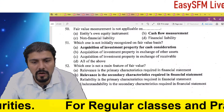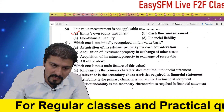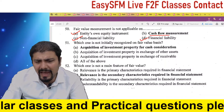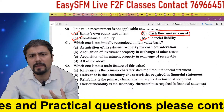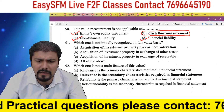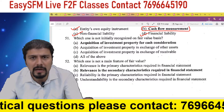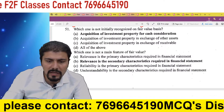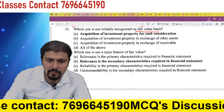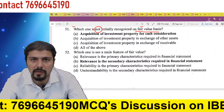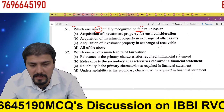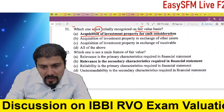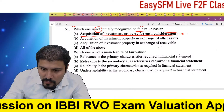Fair value measurement is not applicable on an entity's own equity instruments. Financial liabilities — fair value does apply on those. Cash flow measurements: where we directly have cash, we don't derive a separate fair value; the fair value of cash is the cash itself if it is received today. Which one is not initially recognized on a fair value basis?